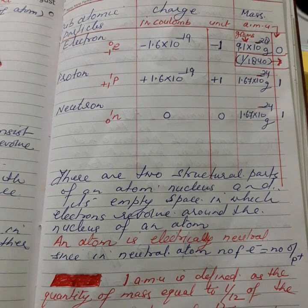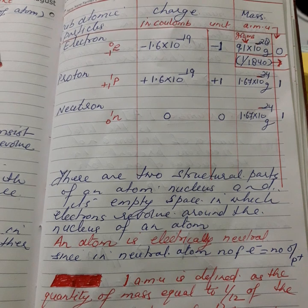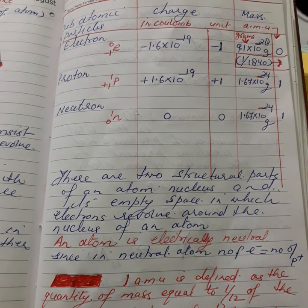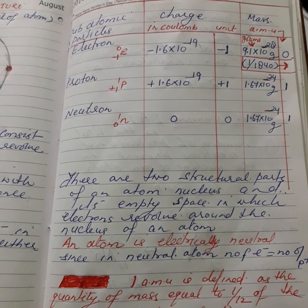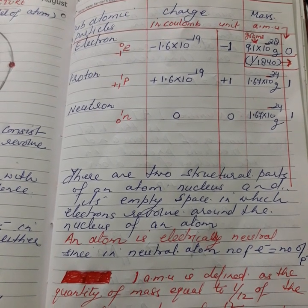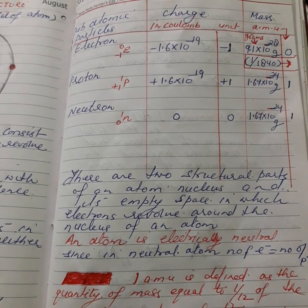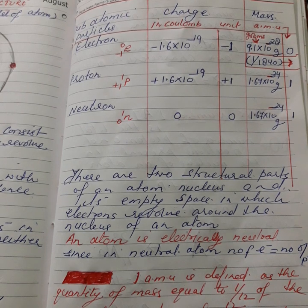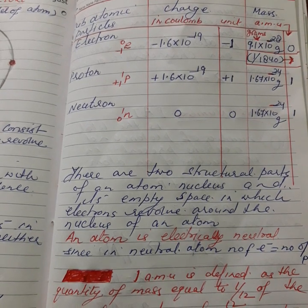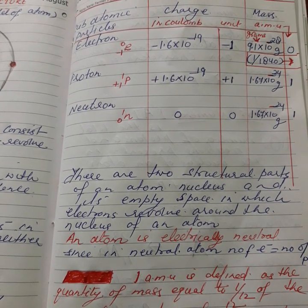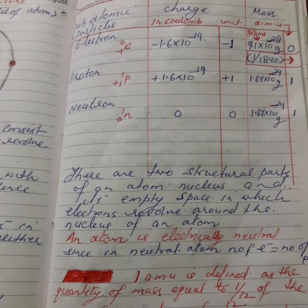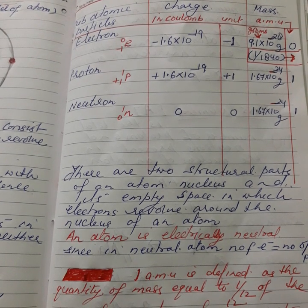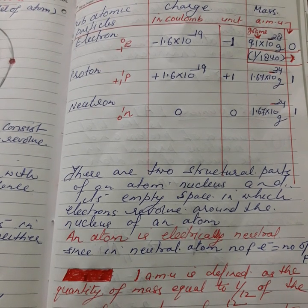Now we will look at mass — in atomic mass units, in grams, and relative atomic mass. First, you should know what is atomic mass unit. One amu is defined as the quantity of mass equal to one-twelfth the mass of one atom of carbon-12, which is taken as the standard quantity.